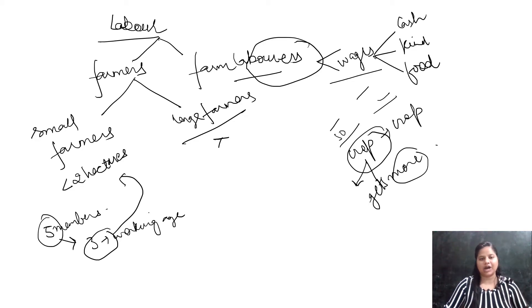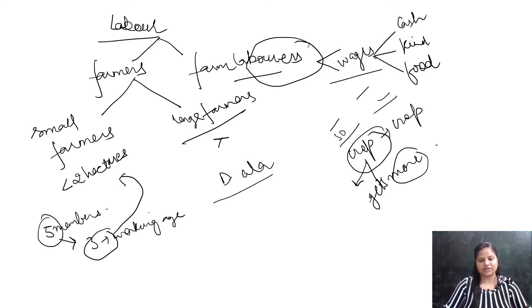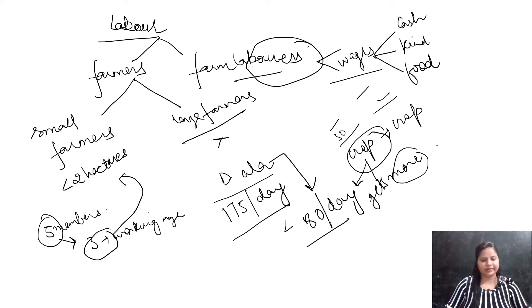There is a small story about a farmer named Dala. The government has set a minimum wage rate, meaning employers must pay at least that amount. The minimum wage set by the government is 175 rupees per day, but Dala works for approximately 80 rupees per day because there is so much competition for work and not enough work available, so laborers accept even less than the minimum wage.